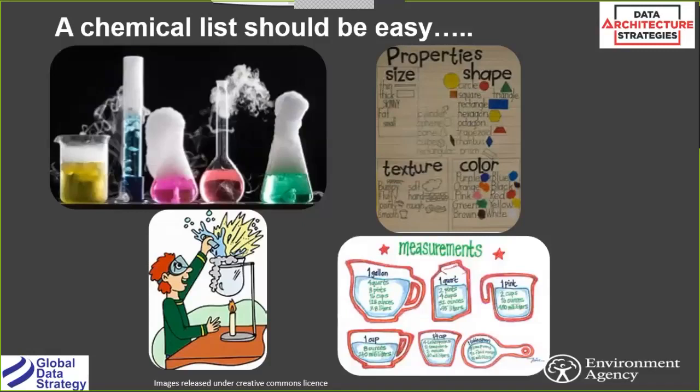Not to be put off, we took out all the erroneous information — all the things that weren't chemicals, all the monitoring methods, all the units — and we deduplicated the list. To be honest, we felt quite proud. We had a nice clean chemicals list. We gave it to the business to ask them to check, and the feedback was terrible.